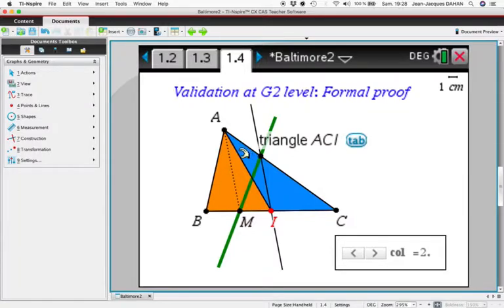So if we cut the blue triangle and give it to the orange one, if we cut the orange one and give it to the blue one, we will not change the area of the two figures.